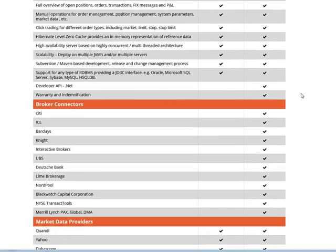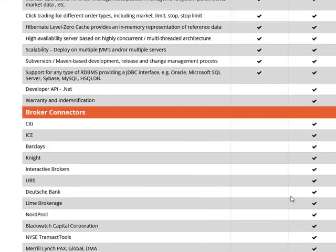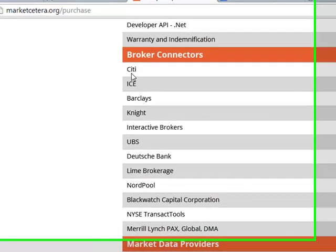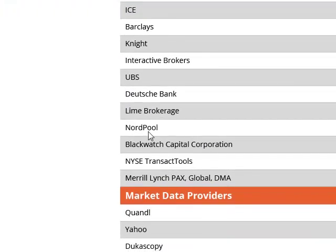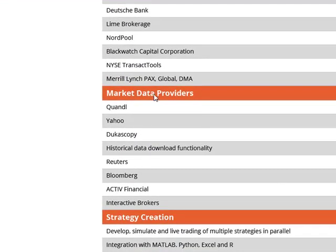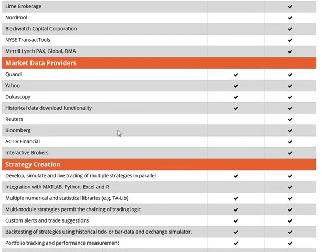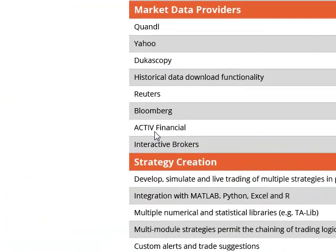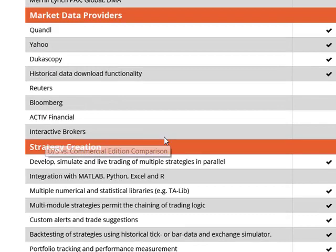Here's where Marketcetra did fall apart a lot previously. Now they've got broker connectors as part of the enterprise options, which is quite interesting. You have Ice City, Barclays, Interactive Brokers, Deutsche Lime, Blackwatch, and others. Now, this is where it gets very interesting — you can go to Dukas Copy, and it's part of the free edition. That is fascinating. With the market data providers, you get Interactive Brokers, Active, Reuters — all the professional providers. And if you need it, you also get Yahoo and Dukas Copy. That's pretty cool.